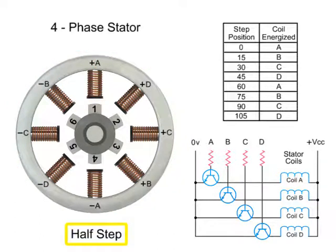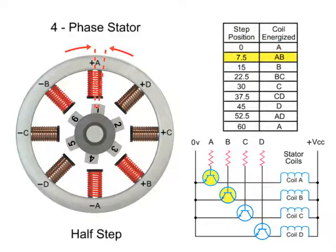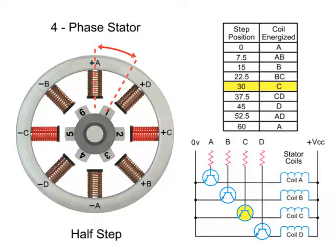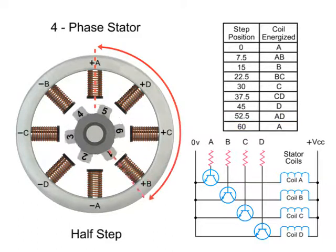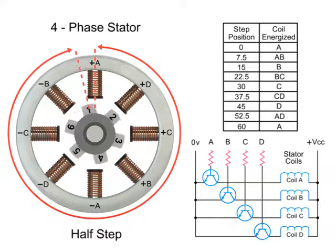For half-step mode, the stepper motor's resolution can be doubled by altering the switching of coils. Half-stepping occurs when one winding is energized and then two windings are energized alternately, causing the rotor to rotate at half the distance. Switching coils in this combination will rotate in the reverse direction. In this example, 48 steps are required to make a full rotation at 7.5 degree increments.